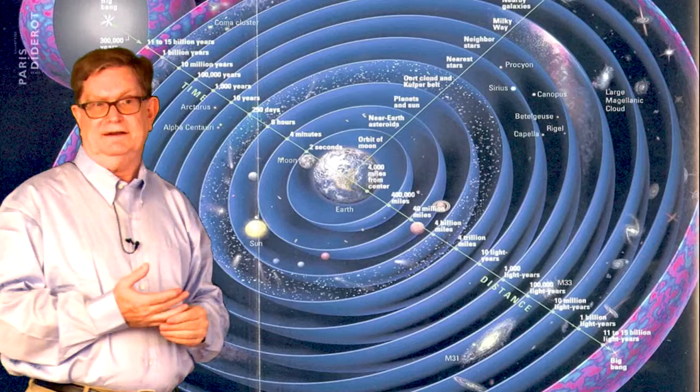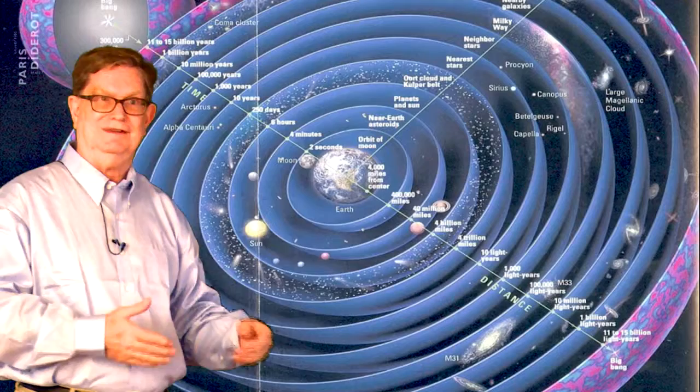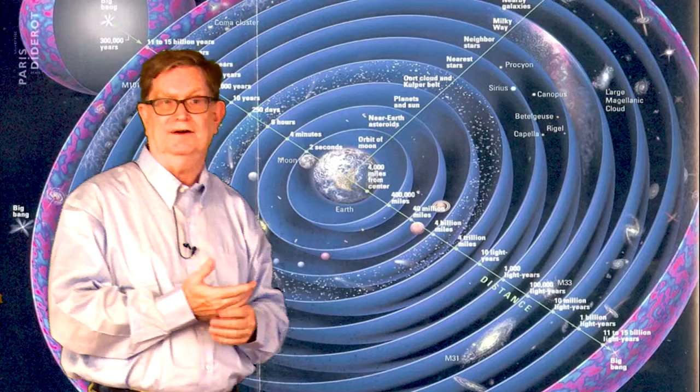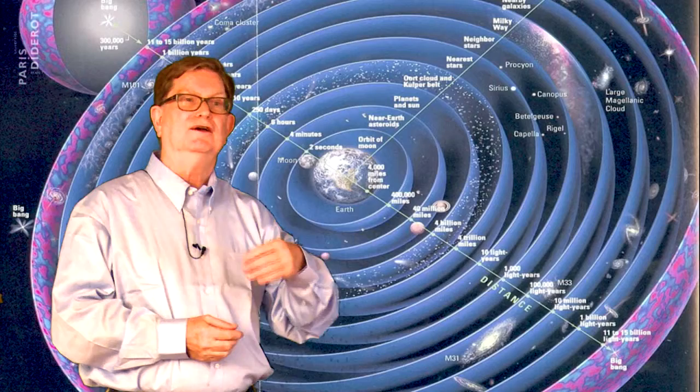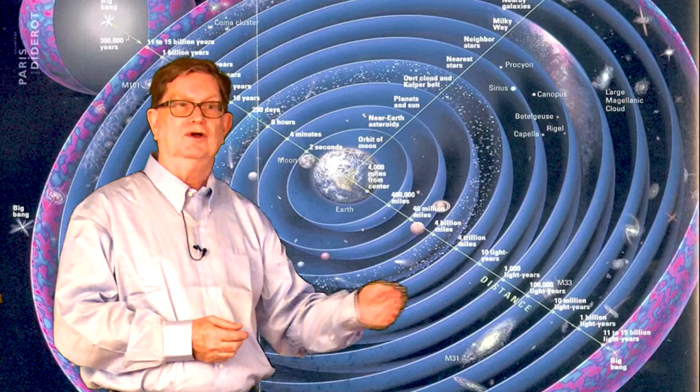But if you take a typical star in our galaxy, the light takes anywhere from those ten years up to almost 100,000 years. That is 100 times 1,000 years for the light to get here. That's just our own galaxy. So when we take pictures of stars in our own galaxy, we're seeing them years ago, thousands of years ago, tens of thousands of years ago.